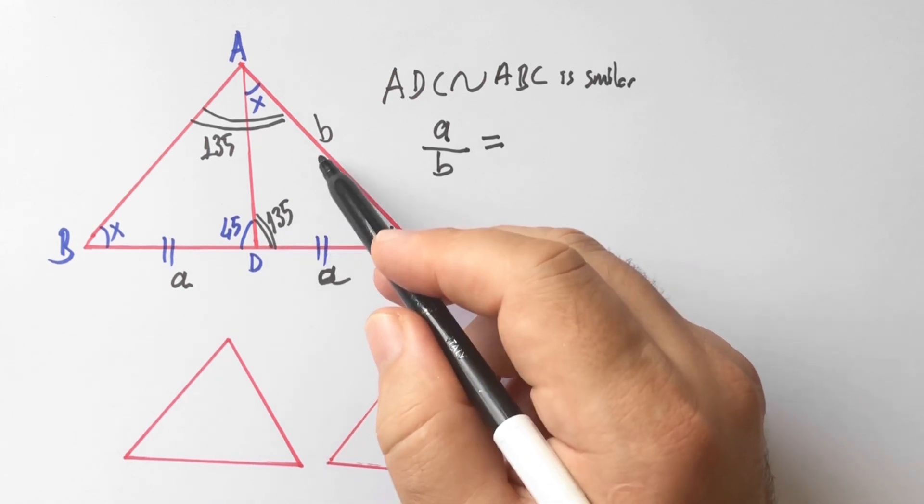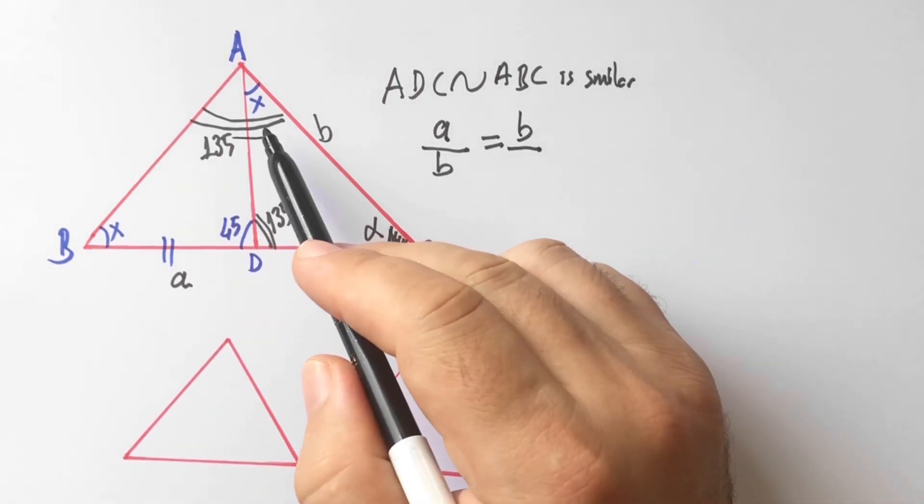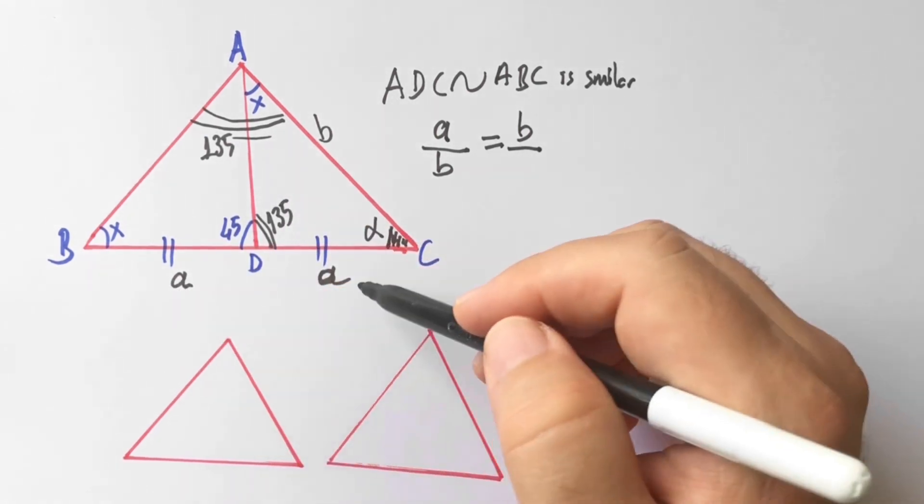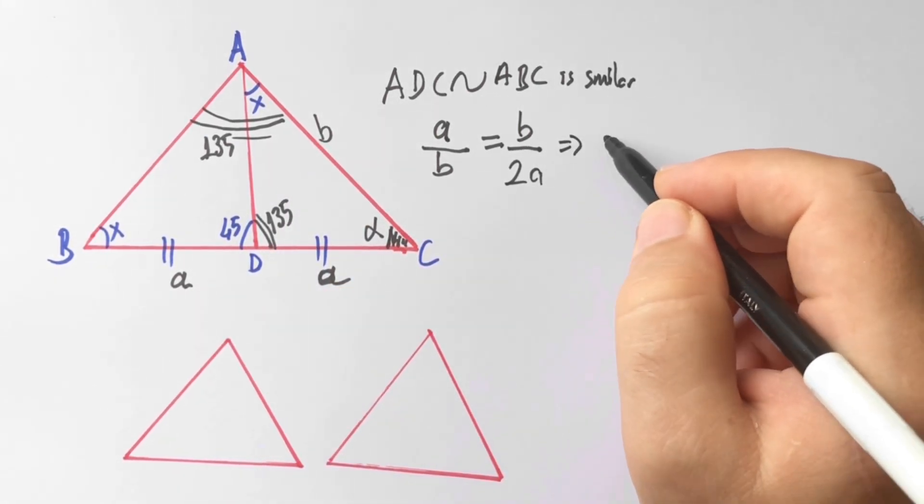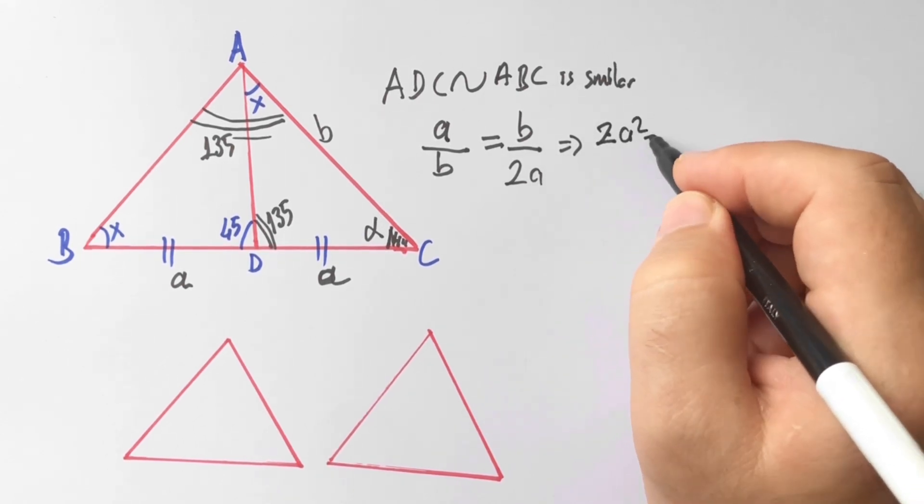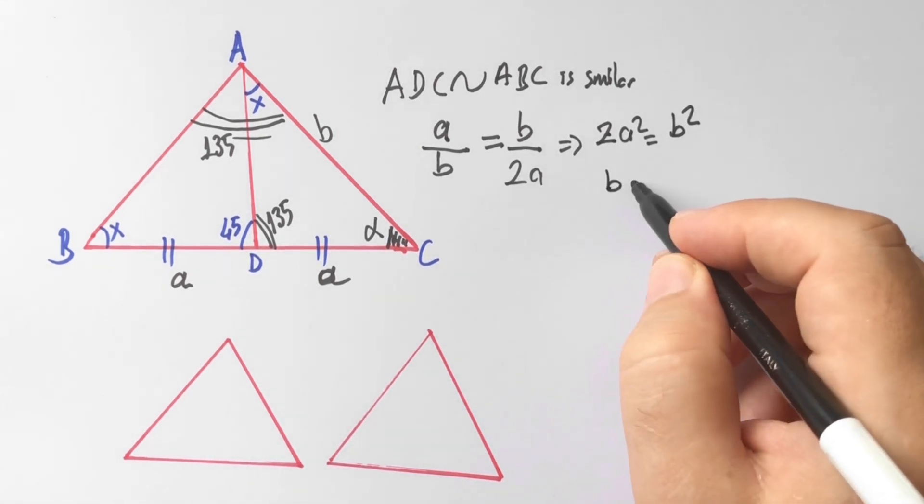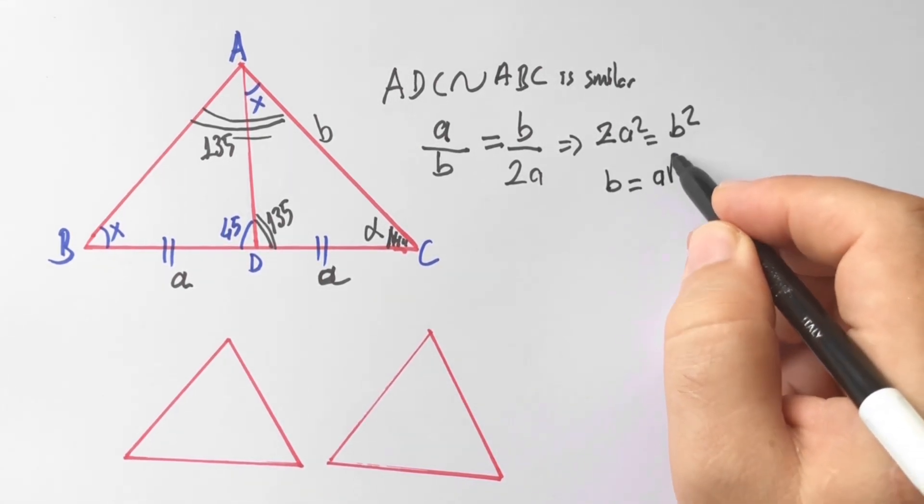Over opposite of 125 degrees is 2A. Therefore B equals... so B is equal to A root 2.